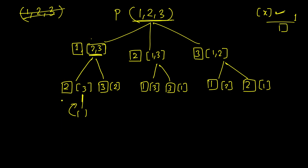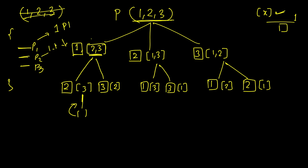When a recursive call returns, it returns a list of different possibilities — let's say p1, p2, p3. Our task is: we had fixed one at the first place, so we take all these individual vectors and append one to them. This becomes one followed by p1, one followed by p2, and so on. For example, this returns [2, 3] and we append two to it, so this becomes [2, 3] and the other side returns [3, 2]. Whatever the result, just append the fixed digit at the beginning.